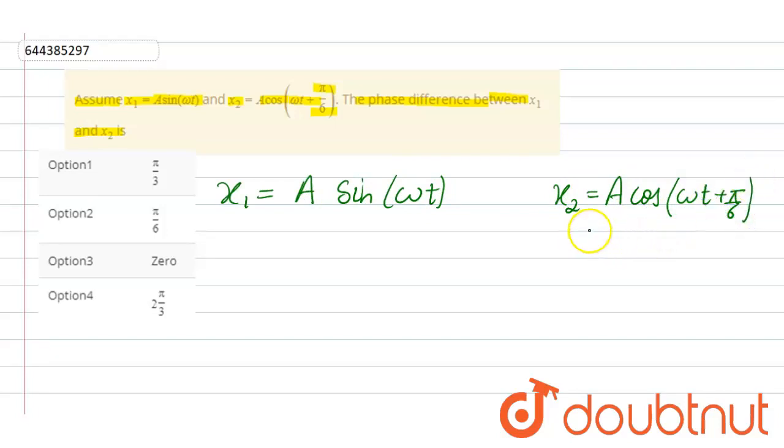So what we do is convert both into the form of the same trigonometric function. For the second, we write here A sin. Now we know sin 90 plus theta is cos theta.